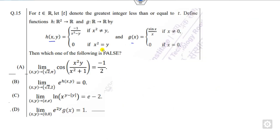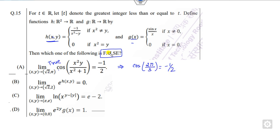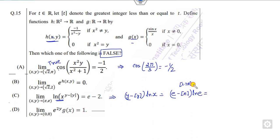Now look at question two: find which is the false statement about functions h and g. The first statement is independent of h and g, so substituting directly gives 2π/3, and cos(2π/3) is minus 1/2 — a correct statement. The second function is also independent of h and g. Substituting gives e minus greatest integer of ln(e), where greatest integer of e (2.718) is 2 and ln(e) is 1, giving e minus 2 — also a correct statement.